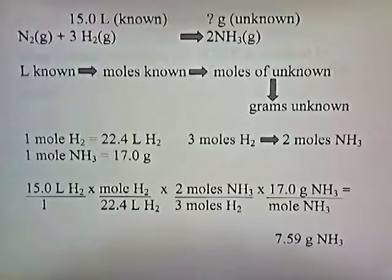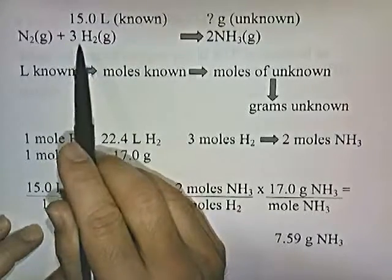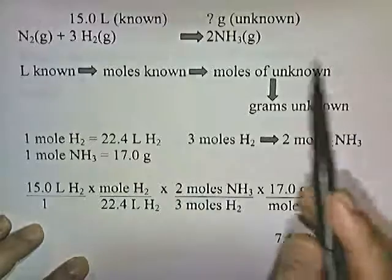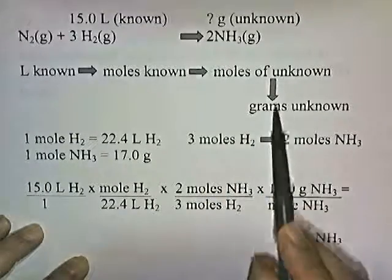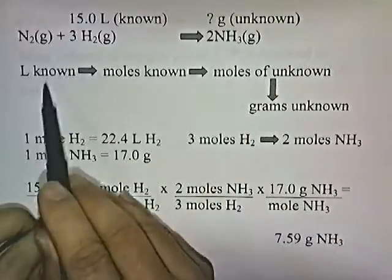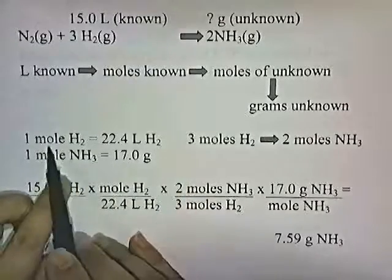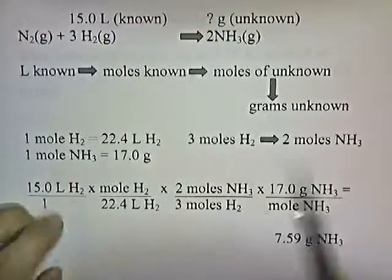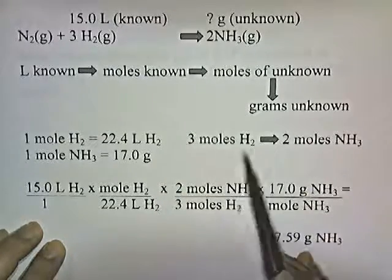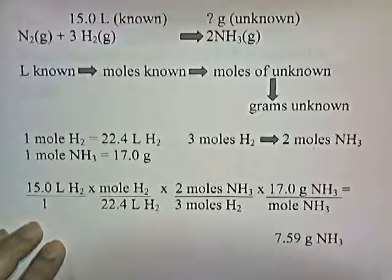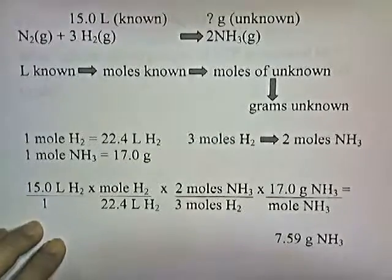Here's the overview of what's going on. They tell us we have 15 liters of H₂ and ask us for grams of NH₃. To go from liters of known to moles of known, we use the 22.4 L/mol relationship. To go from moles of known to moles of unknown, we use the 3-to-2 ratio. To go from moles of unknown to grams of unknown, we use the molar mass of NH₃.